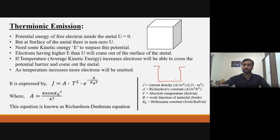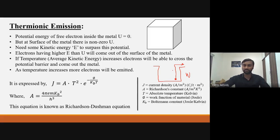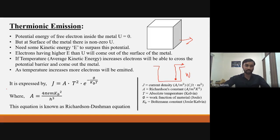Consider a potential barrier of height W. Electrons with higher kinetic energy will come out over this barrier. As I increase the temperature — and temperature means average kinetic energy of particles — more and more electrons will be able to overcome the potential barrier. So as temperature increases, more and more electrons come out of the metallic surface, and the number of electrons coming out is given by a specific expression for current density J.